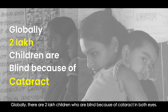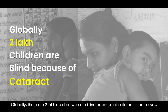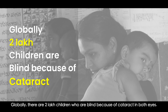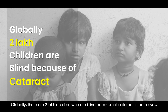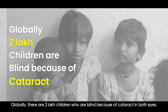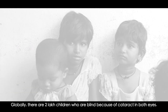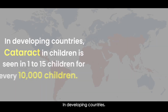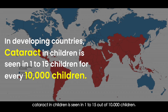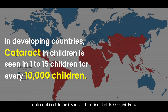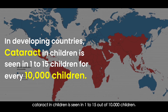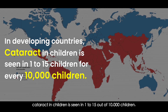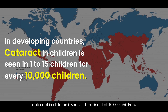Globally, there are two lakh children who are blind because of cataract in both eyes. In developing countries, cataract in children is quite common and is seen in 1 to 15 children for every 10,000 children.